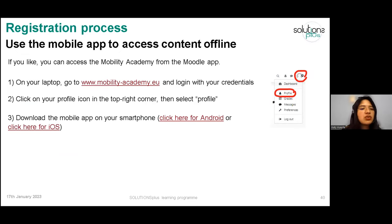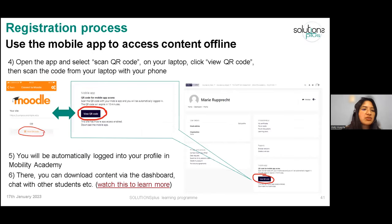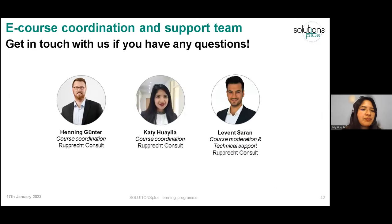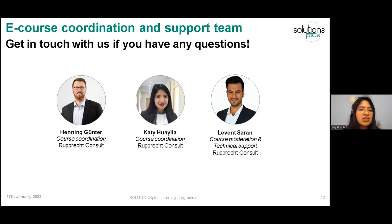You can also access all the content through the Mobility Academy mobile app — download the app and access with your login details. You can also access the content offline. You can access via laptop or in the app. We are happy to have you here in the course, and if you know other people interested in this topic, feel free to share the link with them — they can still join today or tomorrow, as we will start launching the first unit tomorrow. If you have any questions, doubts, or technical issues with the platform, there is a section called Technical Support where you can post your questions and we will get back to you as soon as possible.